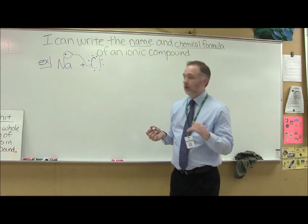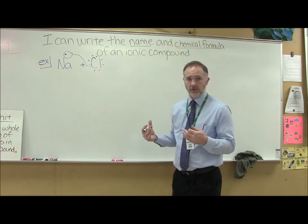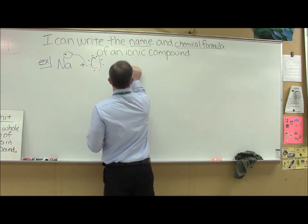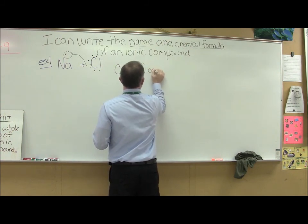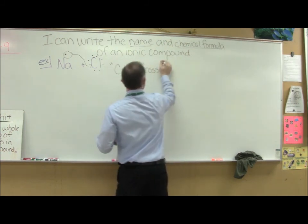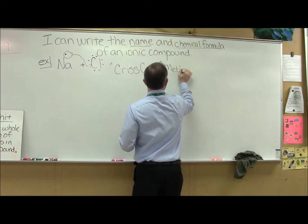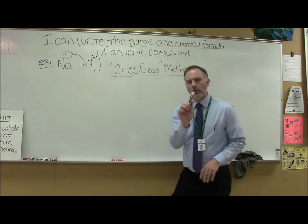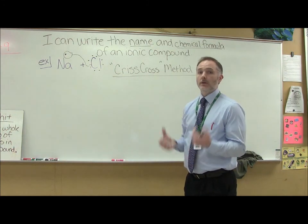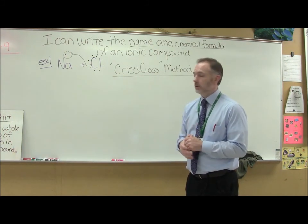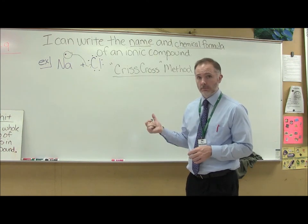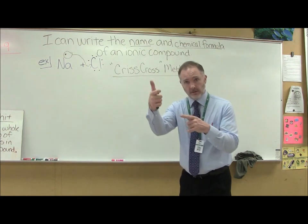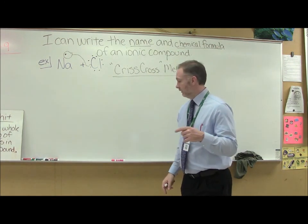And here's what it's called. You're going to love this title. It's called the crisscross method. The number one important thing with the crisscross method is you have to be able to determine what charge your cations and anions have. That's the most important part of this. And I'm going to ignore that telephone in the background. They're going to have to leave a message.